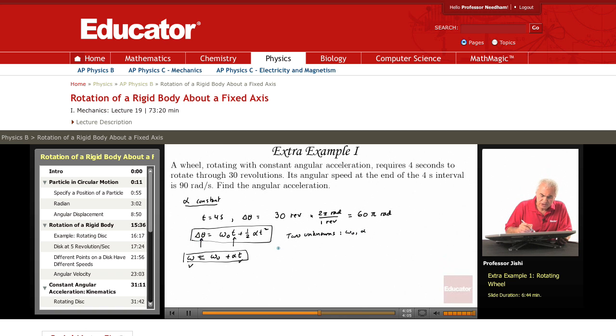Delta theta is 60 pi. It's omega zero times t which is 4. So that's 4 omega zero plus half alpha t squared is 16. So this is plus 8 alpha.